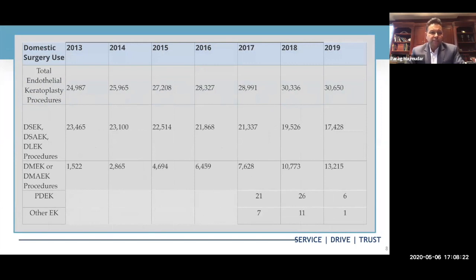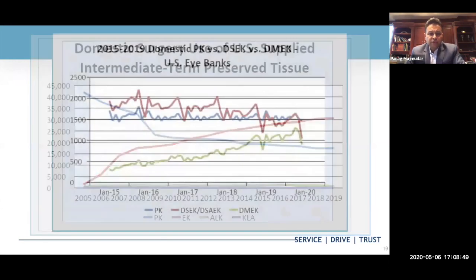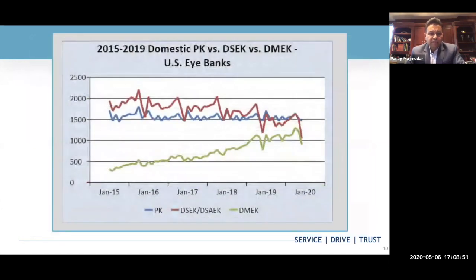Looking specifically at endothelial keratoplasty procedures: DMEC cases in the United States in 2013, from all eye banks as part of EVAA results, numbered 1,500 cases. By 2019 there were 13,000 cases — a tremendous increase. The graphic representation shows the green line representing a steady increase in DMEC utilization, while DSEC cases and penetrating keratoplasty show different trends.